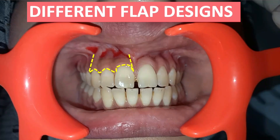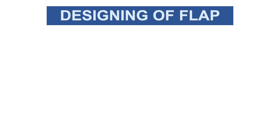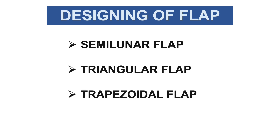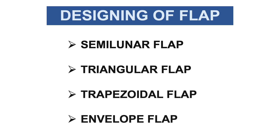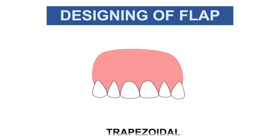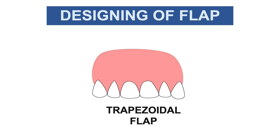Welcome back to my channel Dental Cafe. Today we are going to discuss the different flap designs used in surgery. We have various types of flaps, but in this video we are going to discuss four types: the semilunar flap, the triangular flap, the trapezoidal flap, and the envelope flap. All these flaps are most commonly used at the time of surgery.